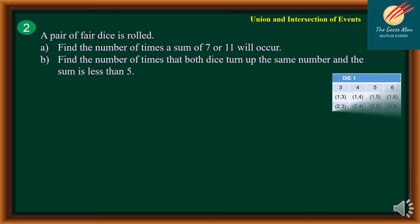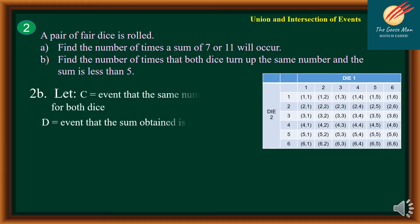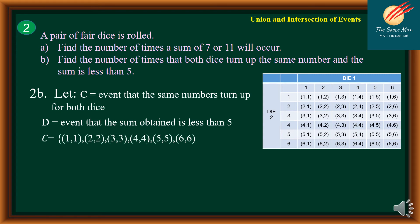Let's move on to 2B. We would like to find the number of times that both dice turn up the same number and the sum is less than 5. We let C equal the event that the same number turns up for both dice. So we have (1,1), (2,2), (3,3), (4,4), (5,5), and (6,6).